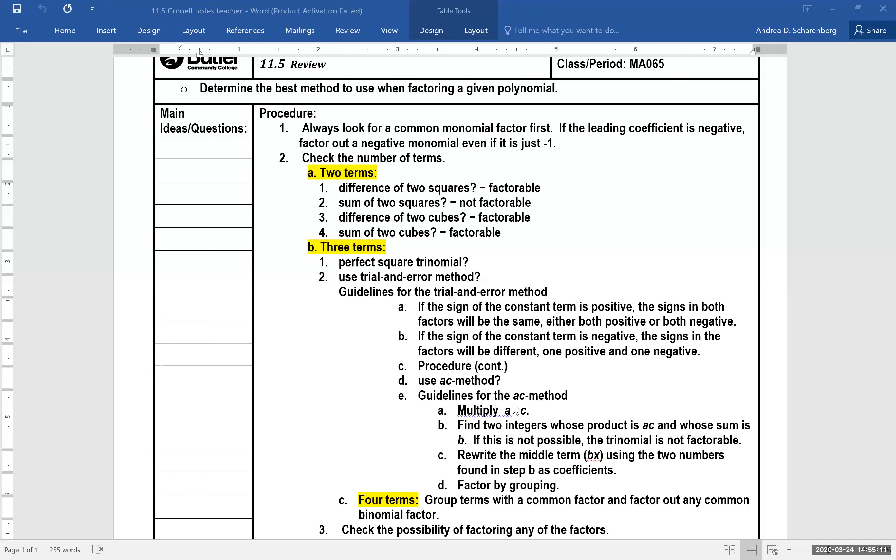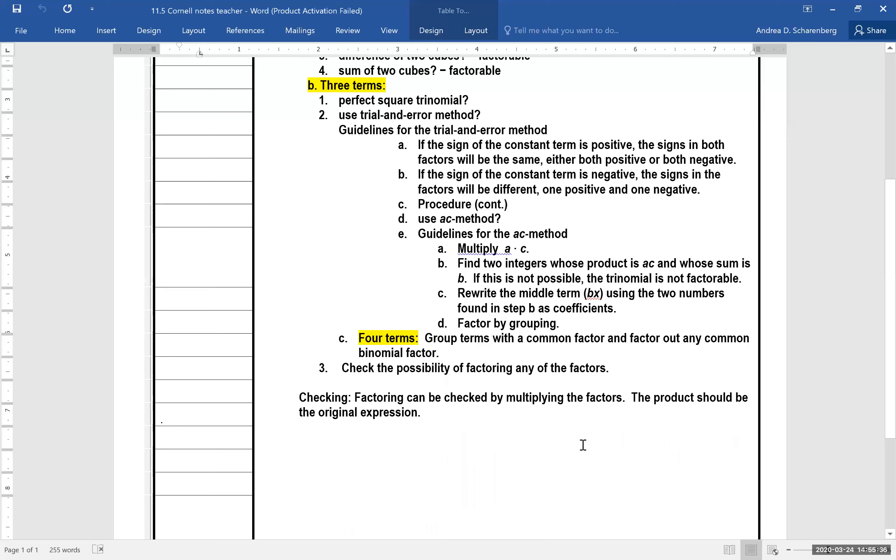The guidelines for the ac method—that's when you multiply the coefficient a times the coefficient c, then you try to find two integers whose product is ac and whose sum is b, the middle term coefficient. Then you rewrite the middle term using those two new numbers, then you factor by grouping. Some of you really liked the ac method, and sometimes that's the best one to use when the trial and error just becomes complicated.